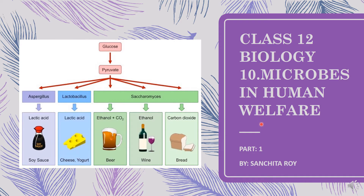In my previous video on Chapter 8, Human Health and Diseases, we saw how different types of microorganisms are responsible for causing different types of diseases in the human body. Now in this chapter, we are going to discuss the usefulness of microorganisms. Microorganisms are not only harmful to human beings — we are also dependent upon them for different types of food products as well as for cleaning the environment.